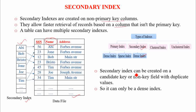Usually, secondary indexes are created on a candidate key or a non-key field with duplicate values. Whenever a secondary index is created on non-key values, it contains duplicate values. That is why it must always be a dense index — it needs one index entry for each and every record. Therefore, secondary indexes can only be a dense index, since they are created on non-key attributes that can have duplicate values.